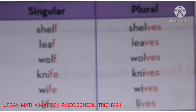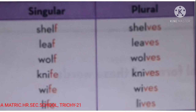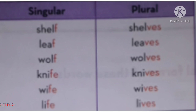Some nouns end with f or fe. If the word ends with f or fe, we replace f or fe with -ves to change it into the plural. For example: self → selves, leaf → leaves, wolf → wolves, knife → knives, wife → wives, life → lives.